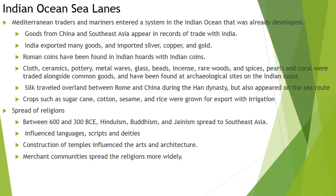We also know that Rome traded heavily with the Indians — through records and archaeology, we've found buried hoards of goods including Indian coins and Roman coins. Beyond precious metals, things like cloth, ceramics, pottery, spices, pearls, and coral are all examples of early traded goods through the Indian Ocean. India is really the buffer between the eastern and western portions of the sea lanes and the Silk Road.